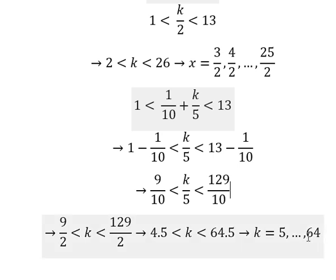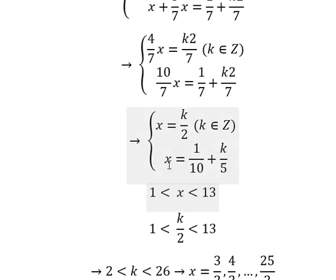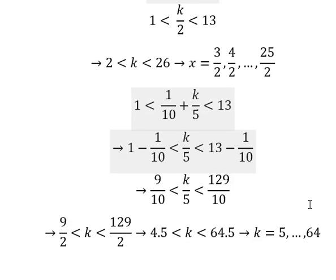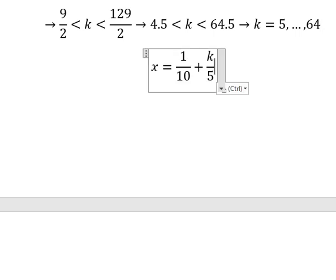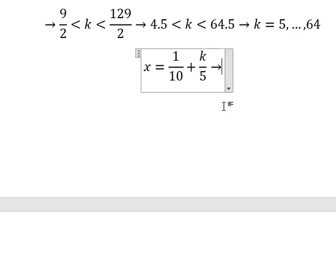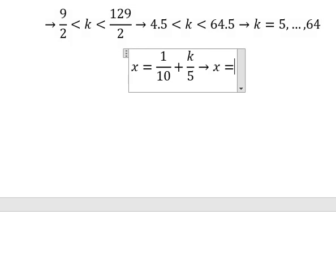So after we have this one, we can get the value of x. In this one, we put k equals to number 5 until 64, and they should be like this.